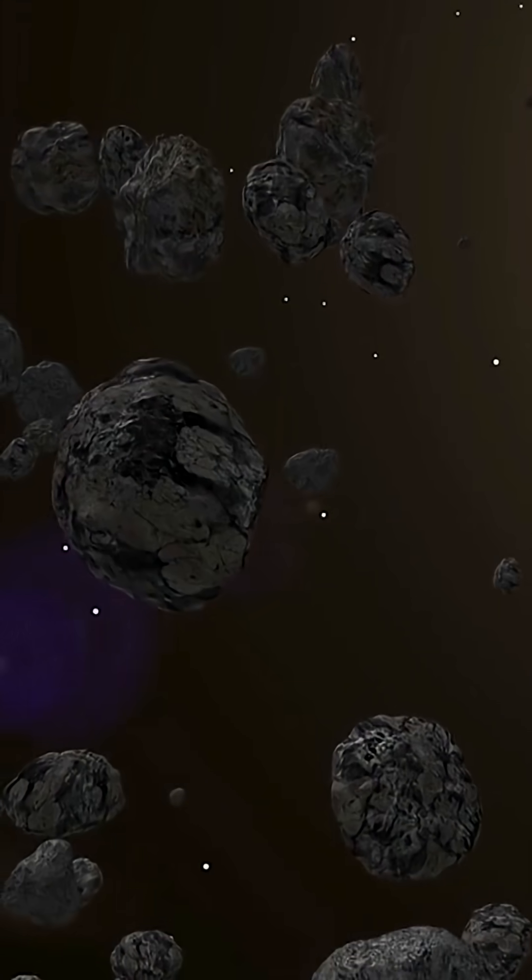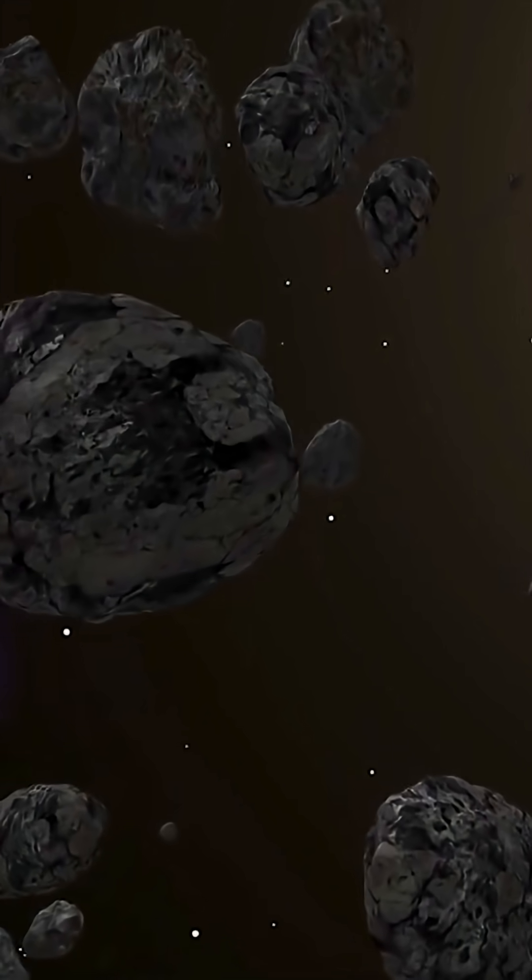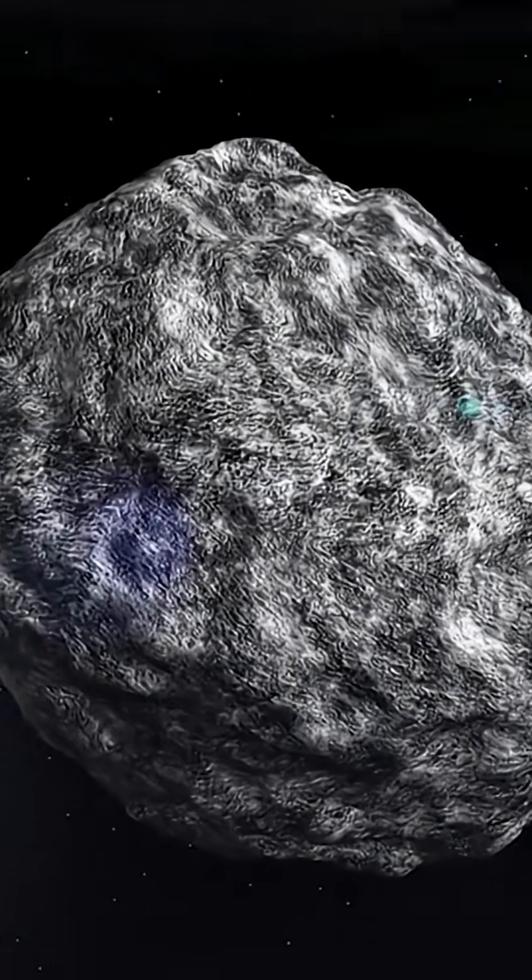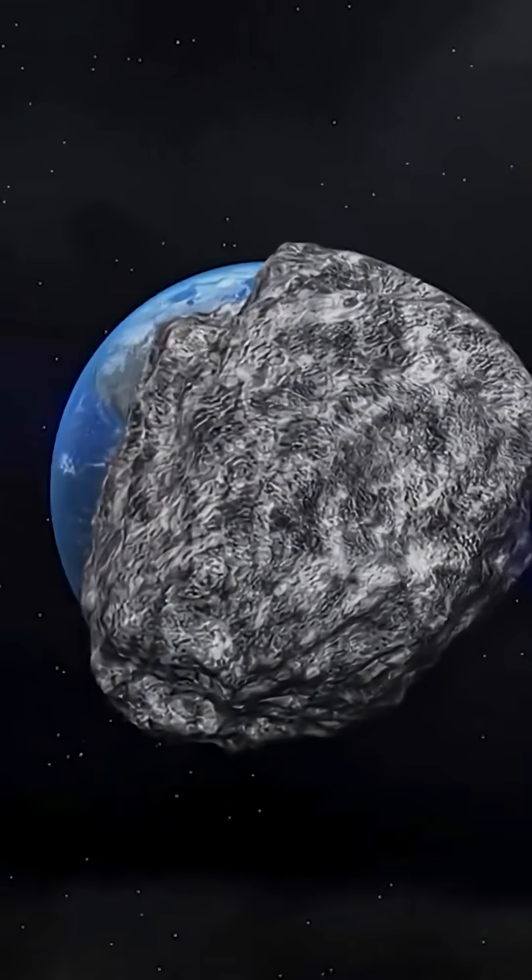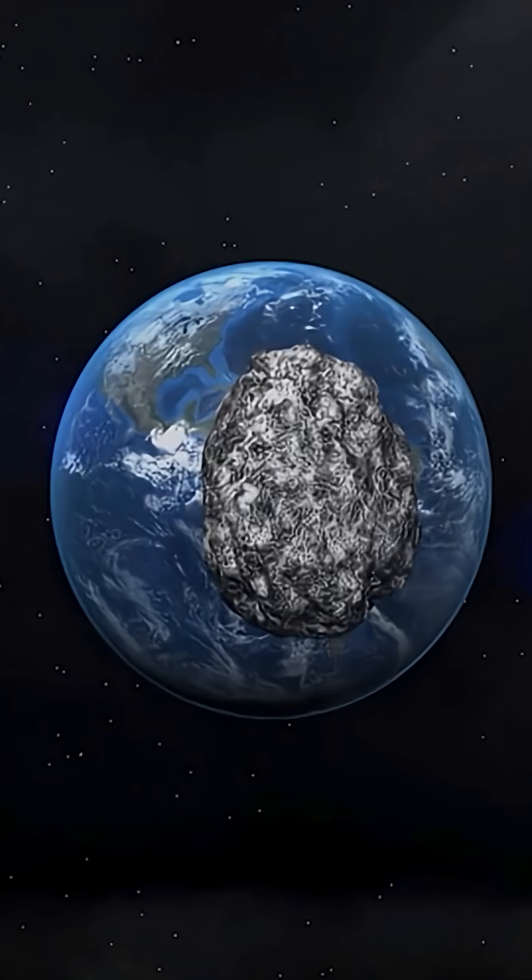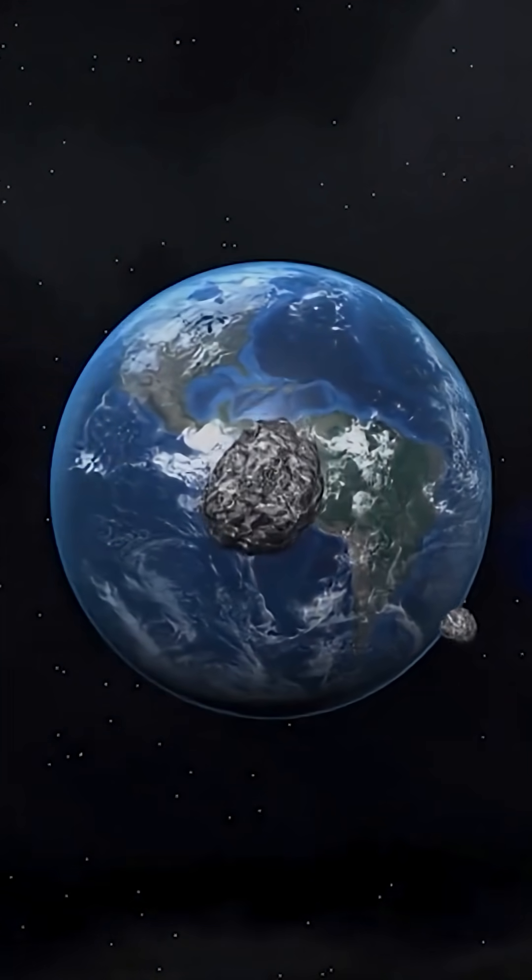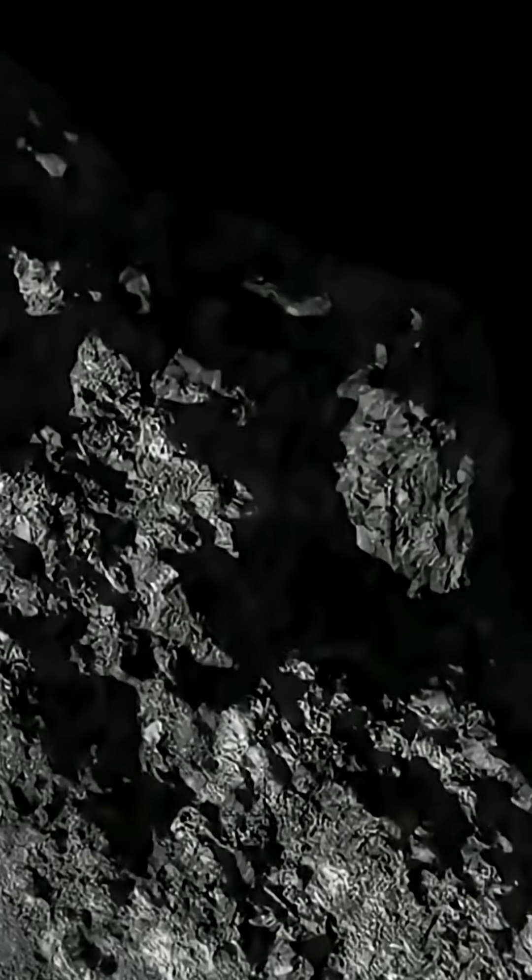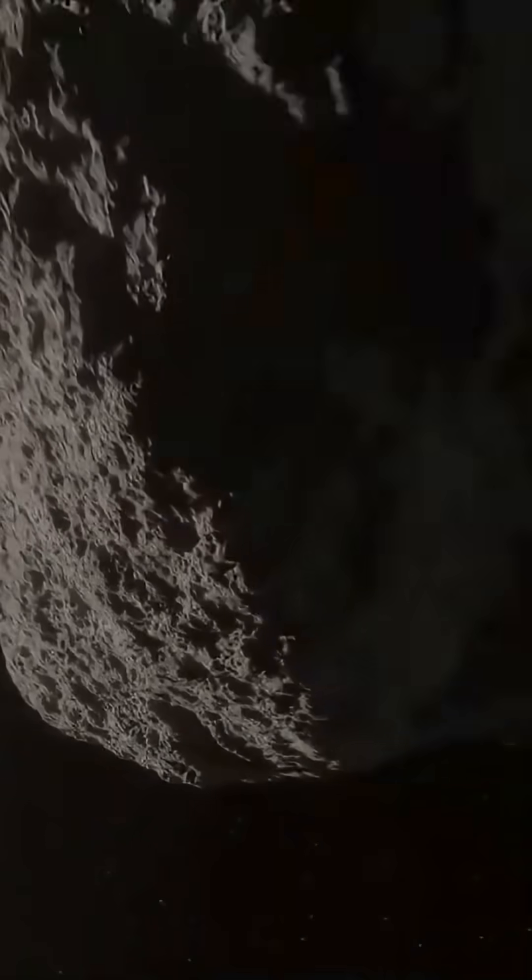Meteoroids are small rock and or metallic bodies in space. The biggest difference between meteoroids and asteroids is size. Meteoroids are significantly smaller than asteroids. For comparison, the size of a meteoroid can be as small as a grain to as big as one meter or three feet wide.